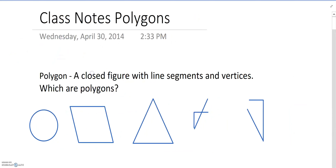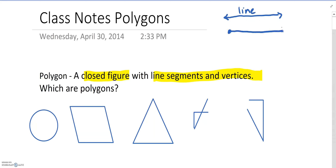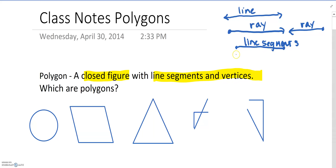Today we're talking about polygons. A polygon is a closed figure with line segments and vertices. We have a line that goes on forever in both directions, a ray that has one endpoint and goes on forever in one direction, and a line segment that has two endpoints and stops at each endpoint. A polygon is made up of line segments that connect at the endpoints, and those endpoints are called vertices.